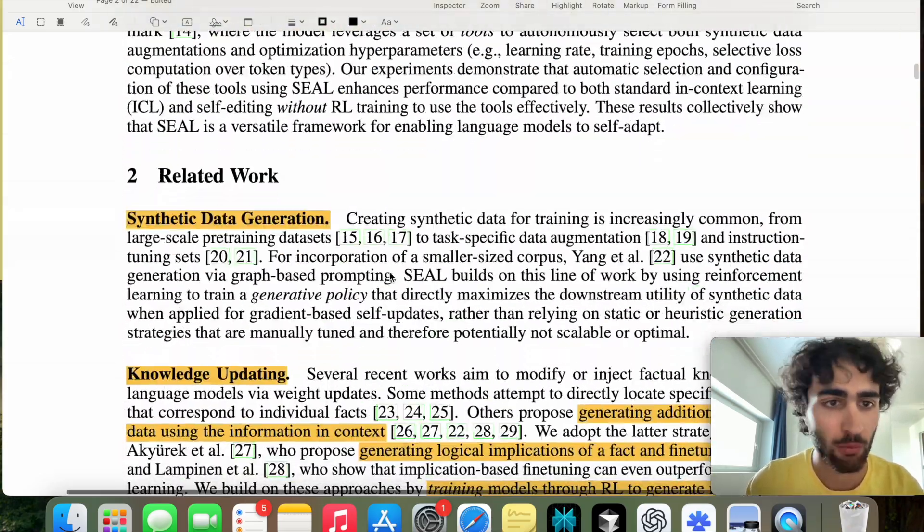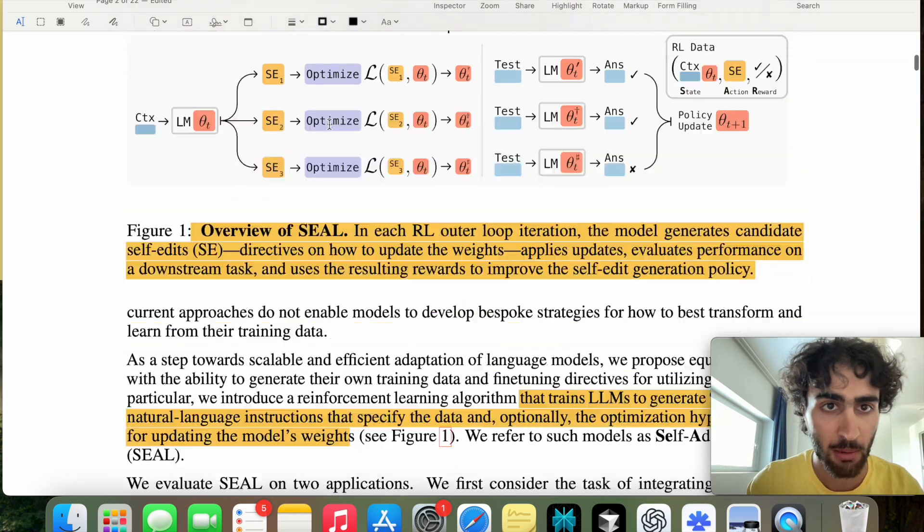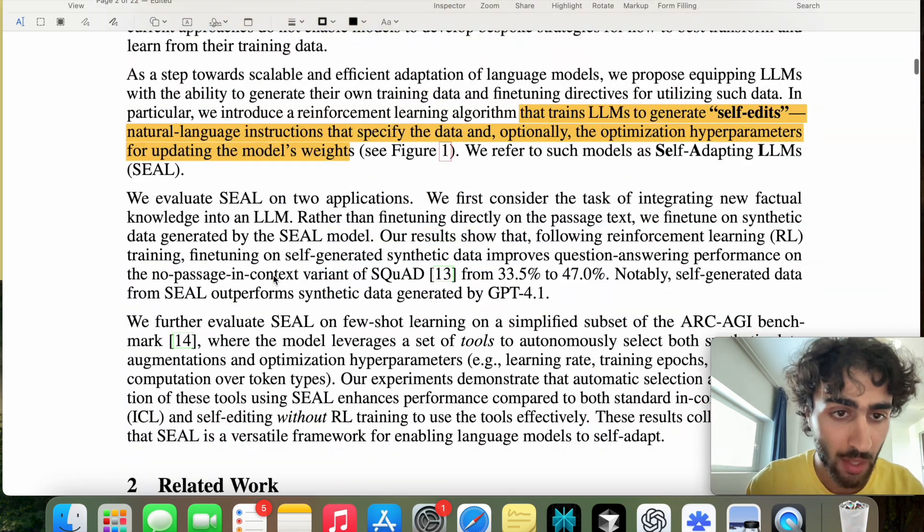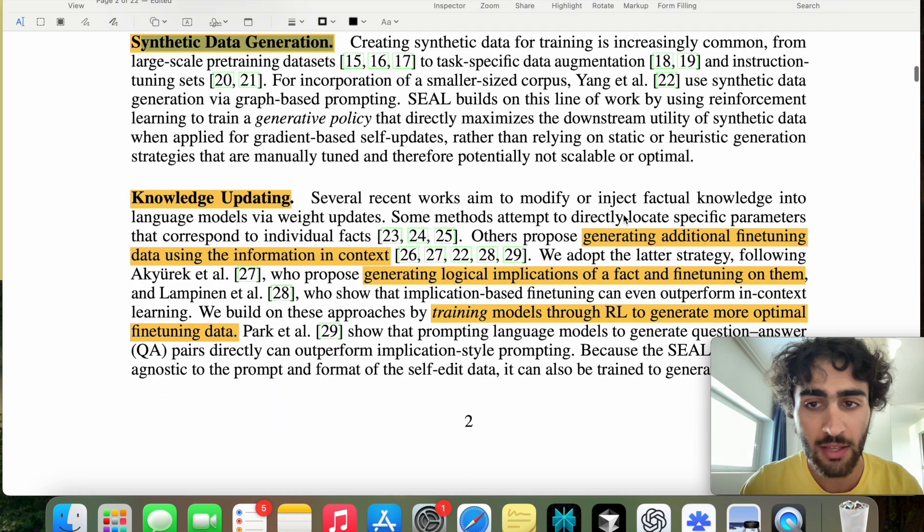In terms of related work, they talk about synthetic data generation, which the name is an autological term, essentially meaning creating data on your own, which would be the self-edits here, the practice quizzes. Sorry, not the practice quizzes, the practice notes. And then knowledge updating. So what is knowledge updating? This is generating additional fine-tuning data using the information in context. So information context would be the practice quiz.